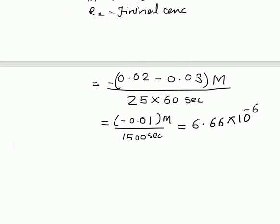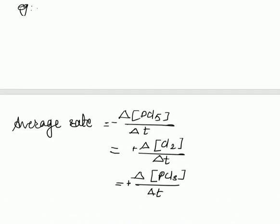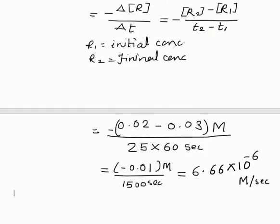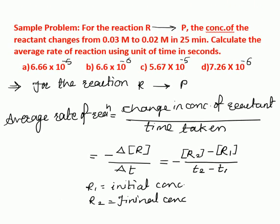After calculation, we get 6.66 × 10⁻⁶ moles per second. Checking the options, option B — 6.66 × 10⁻⁶ — is the correct answer. This same numerical appears in the AIEEE or JEE examination. Next lecture we will see the second type of rate of reaction, that is the instantaneous rate of reaction. If you like my video, please share, subscribe, and press the bell icon so you get notifications when I add new videos. Thank you.